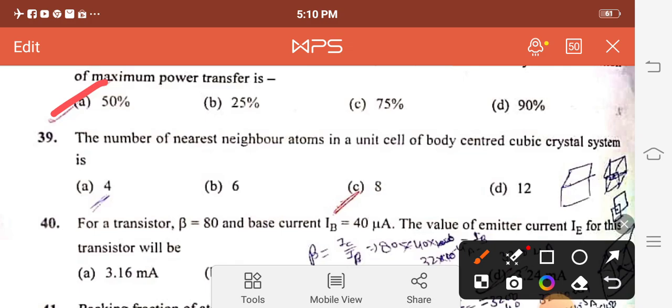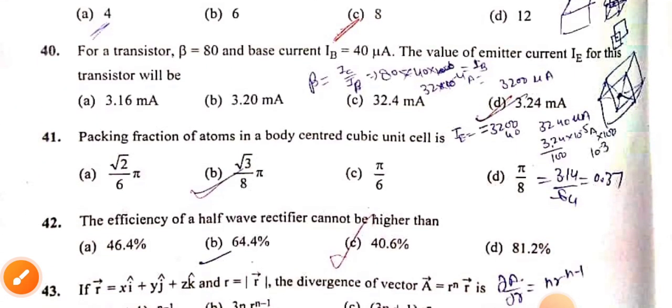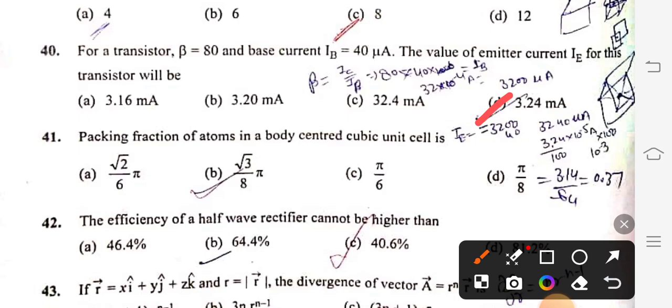Question 39: The number of nearest neighbor atoms in a unit cell of body centered cubic crystal system is 8, option C. Question 40: For a transistor beta equals 80 and base current IB equals 40 microampere, the value of emitter current IE for this transistor will be 3.24 milliampere, option D.